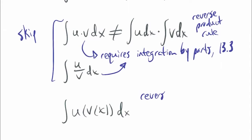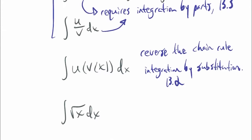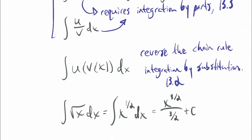For a composite function, for a derivative you use the chain rule, so we need to reverse the chain rule — this is called integration by substitution, which is Section 13.2, the next video. For a root function: when you have the square root of x, rewrite it as x^(1/2) — a power function. Then use the power rule for the antiderivative: add 1 to the exponent to get x^(3/2), divided by 3/2, plus C. Dividing by a fraction is multiplying by the reciprocal, so this is (2/3)x^(3/2) + C.